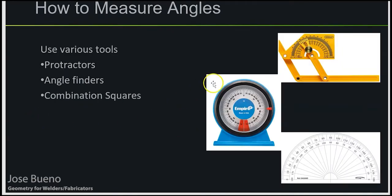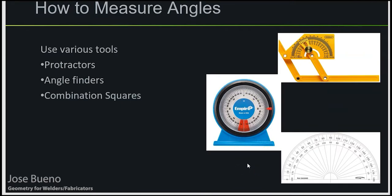How do we measure these angles? There are various tools we can use. We've got a couple of examples of protractors and an angle finder. You can also use combination squares — those will give you some of the more basic angles, and there's also an attachment that acts pretty much as a protractor or angle finder. All of these are pretty similar.